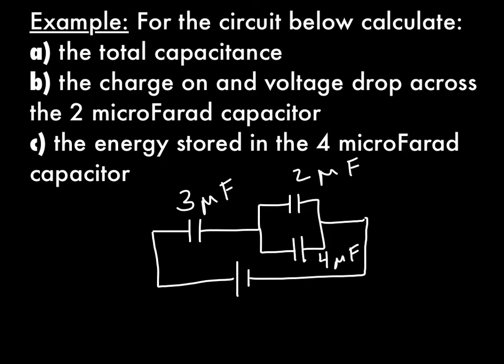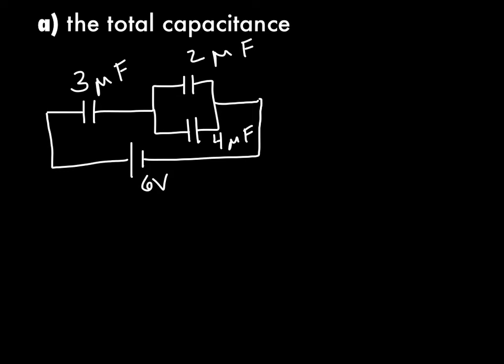Let's try one more example. Same type of problem but the circuit is a little different. To find the total capacitance, start the same way. You notice these two capacitors are in parallel, so C parallel is just the sum: 2 + 4, giving you a total of 6 μF.